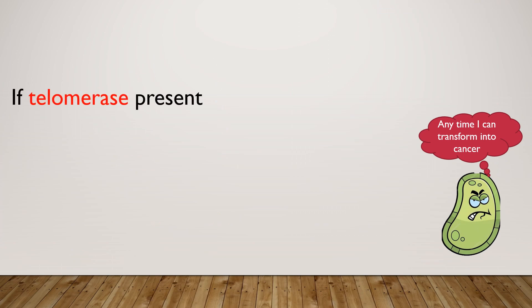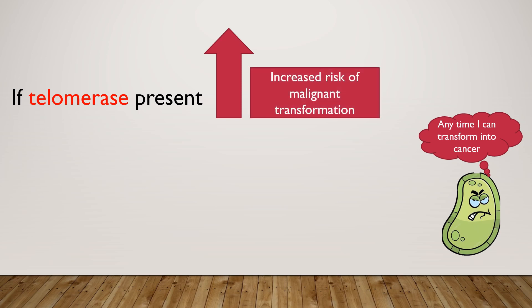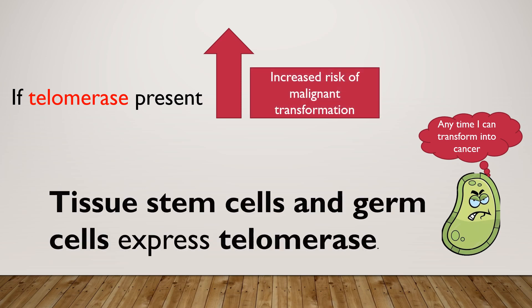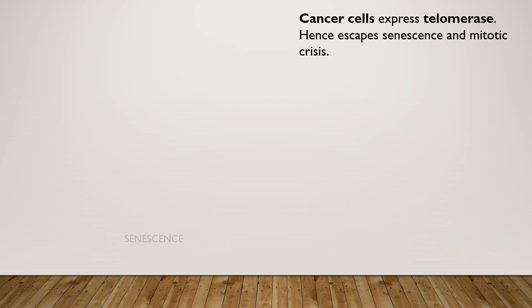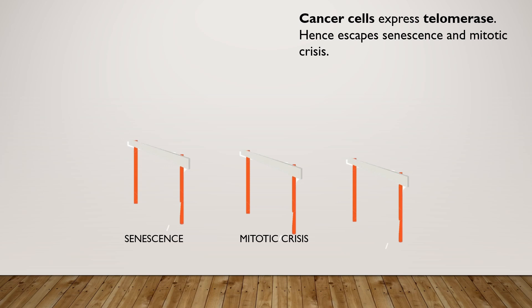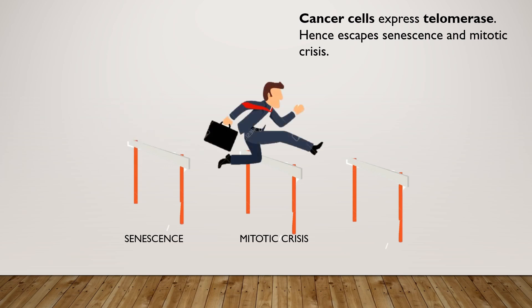If telomerase is present, the cell survives and there is an increased risk of malignant transformation. For example, tissue stem cells and germ cells express the telomerase enzyme, hence there is an increased risk of malignant transformation in these cells. Cancer cells also express the telomerase enzyme, and hence they escape senescence and mitotic crisis.